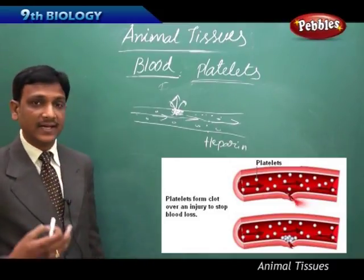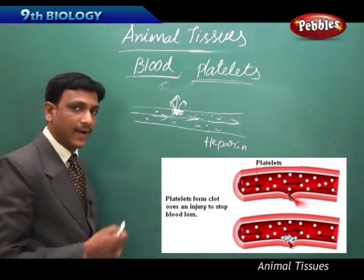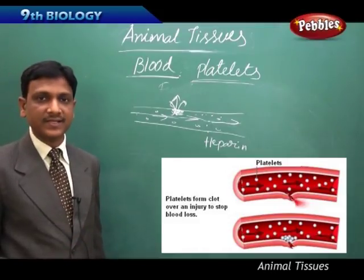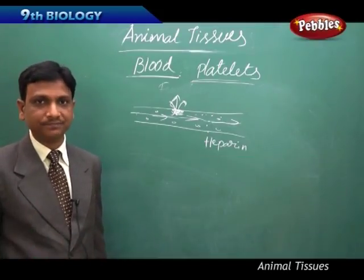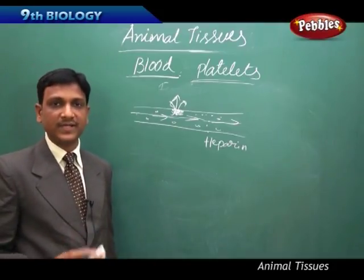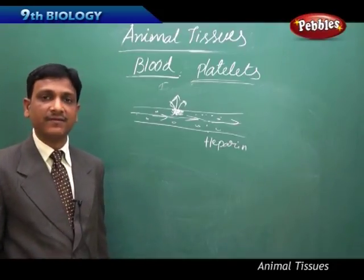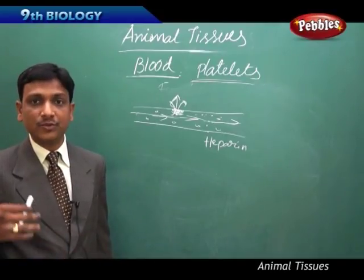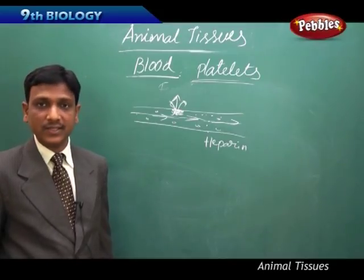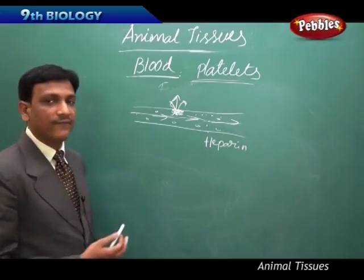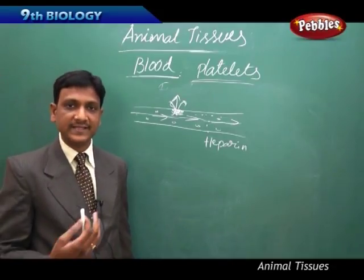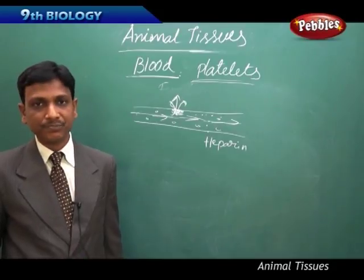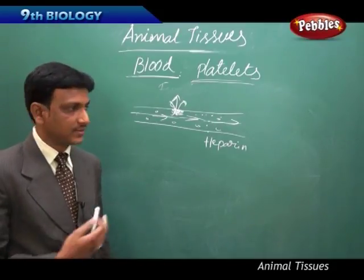To summarize, blood has plasma and a cellular part with red blood cells, white blood cells, and platelets. Red blood cells transport oxygen and carbon dioxide; white blood cells provide immunity and self-defense; platelets help in blood clotting. The next important topic is blood groups. Humans are categorized according to blood groups — A, B, O, and AB — and we will look at how this grouping is done.